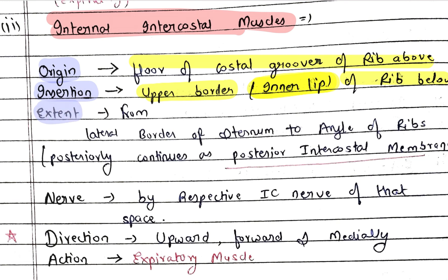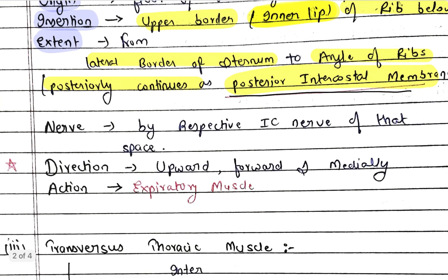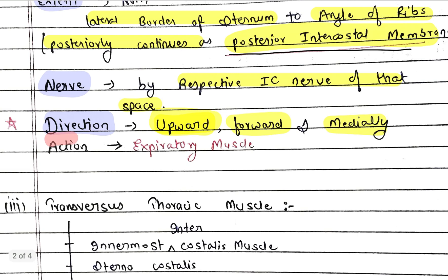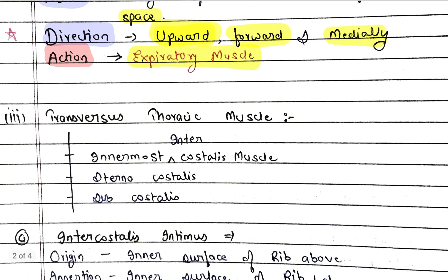Let's talk about extent: it extends from the lateral border of the sternum to the angle of the ribs, and posteriorly continues as the posterior intercostal membrane — so whereas external had the anterior intercostal membrane, here we have the posterior intercostal membrane. Nerve supply is also by the respective intercostal nerve of that space. Direction: upward, forward, and medially — so the only change from external is that it goes upward instead of downward. Action: it is the muscle of expiration.